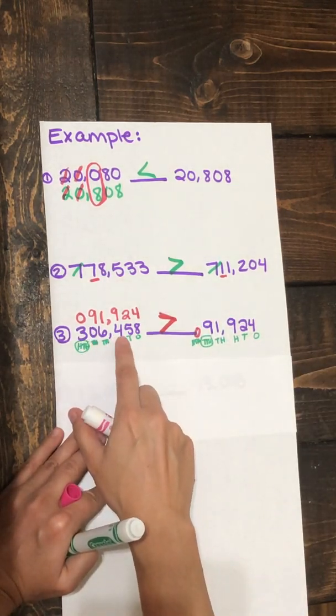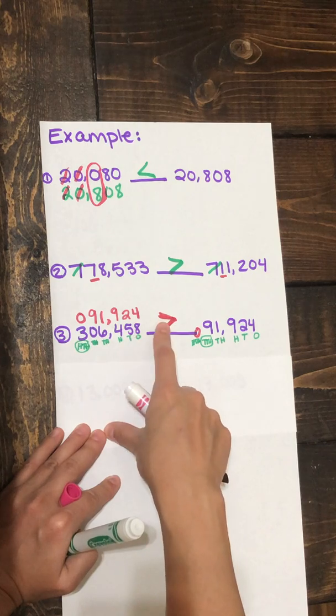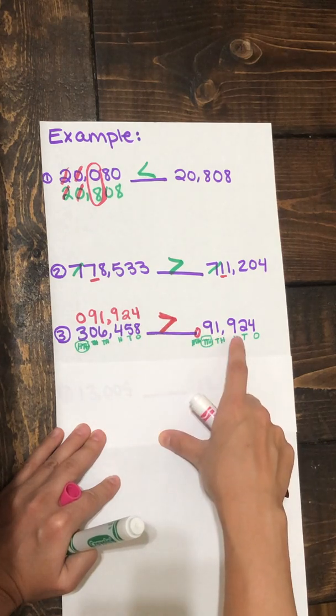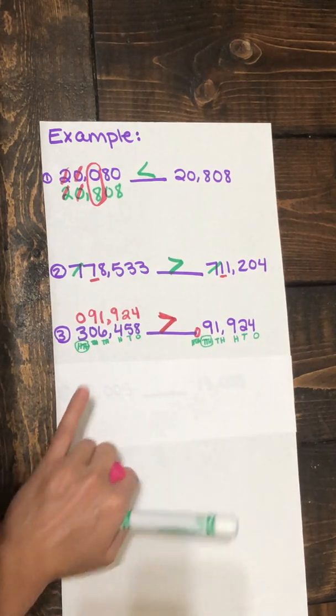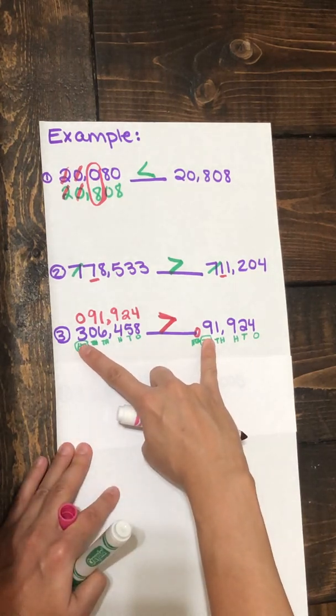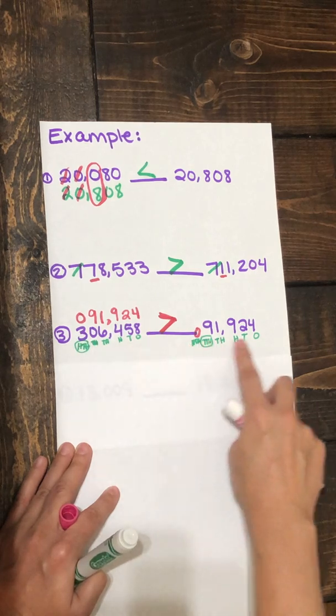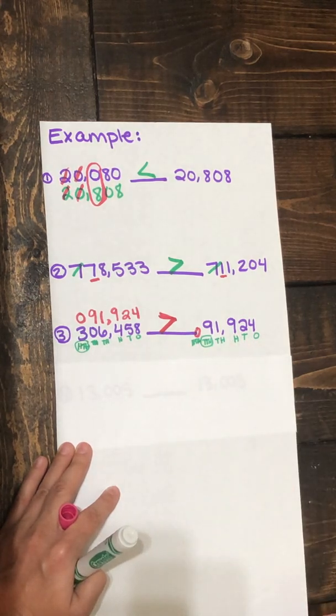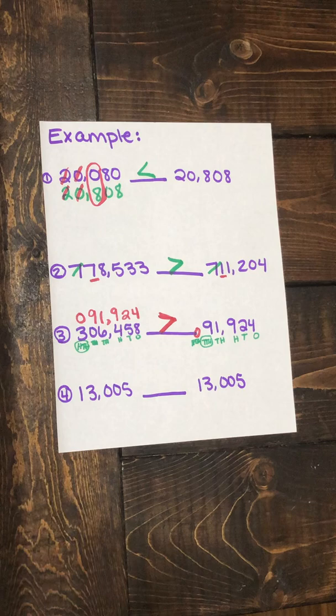So we have 306,458 is greater than 91,924. This one was tricky. So you don't want to just look at which number comes first. You have to make sure you think about the place value. Let's look at our last example.